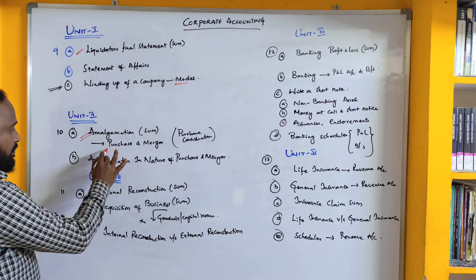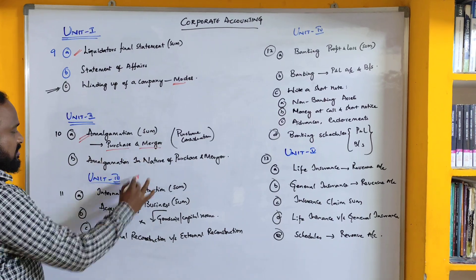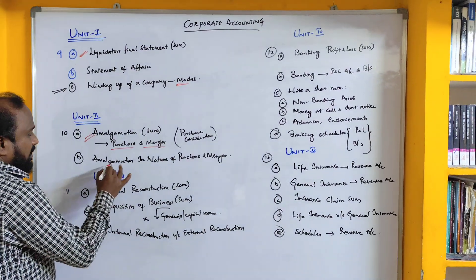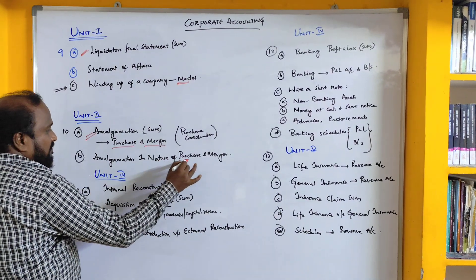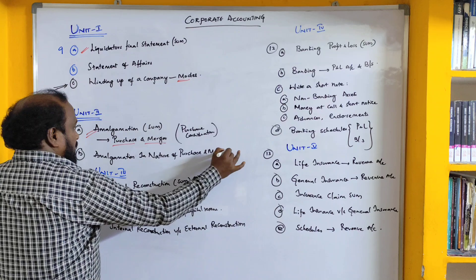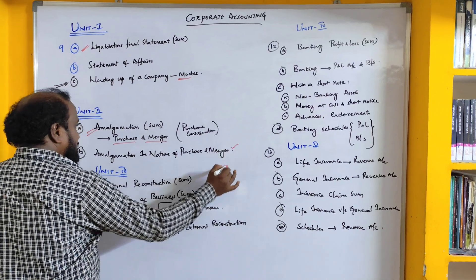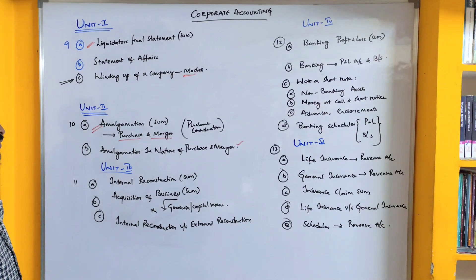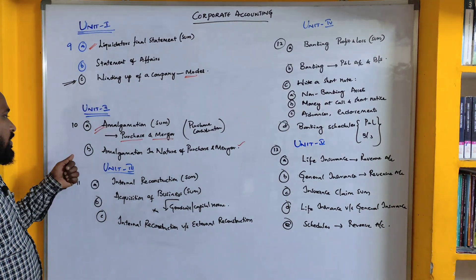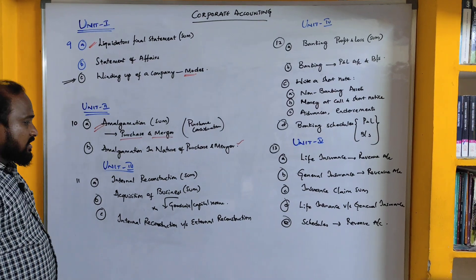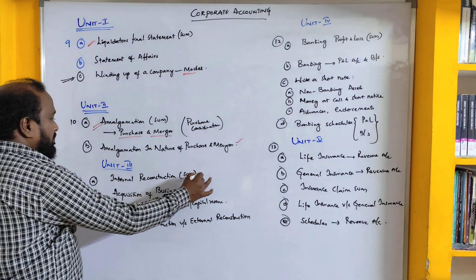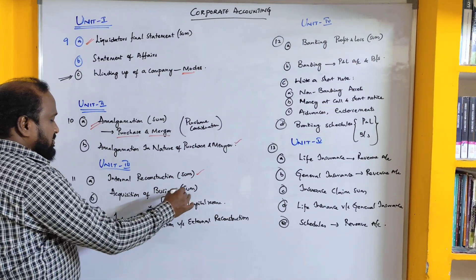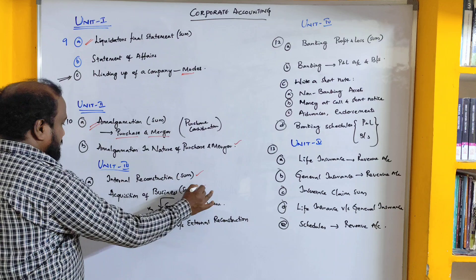From Unit 2, the purchase and merger methods are important, along with the nature of amalgamation and merger — the differences. One theory question will be asked from Unit Number 2. From Unit Number 3, internal reconstruction sums will be asked, along with acquisition of business sums.